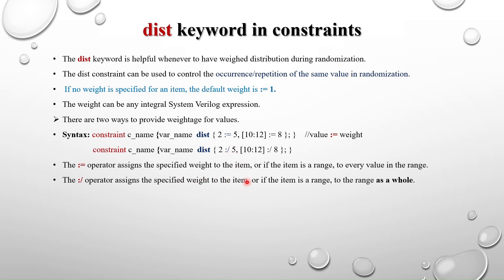The colon-slash operator (:/) assigns the specified weight to the item, or if the item is a range, to the range as a whole. The slash means divide — this operator divides the weightage across the values in the range. For a single item, both := and :/ behave the same. The difference only appears when dealing with ranges.